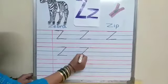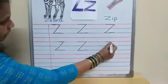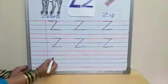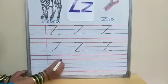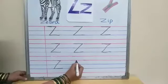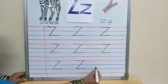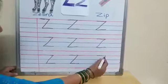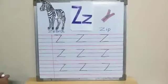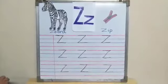Sleeping line, slanting line, sleeping line. Sleeping line, slanting line, sleeping line. Z. All of you practice writing Z at your home. See you soon. Bye.